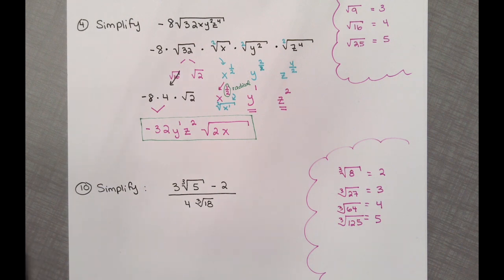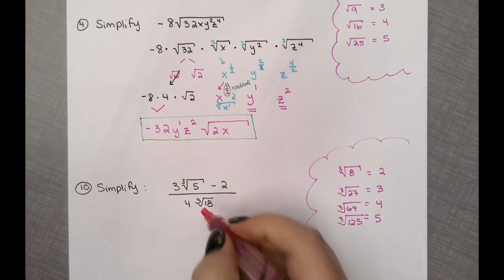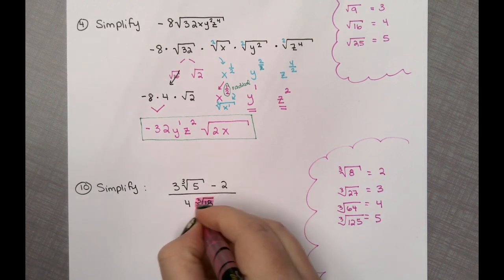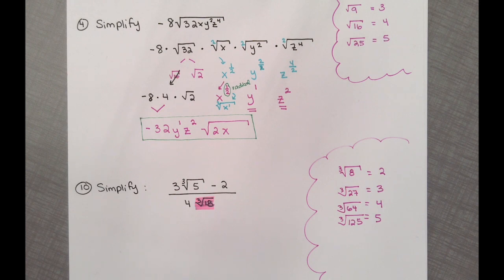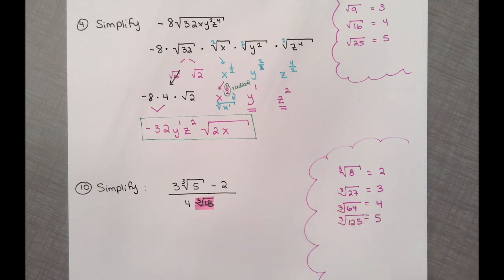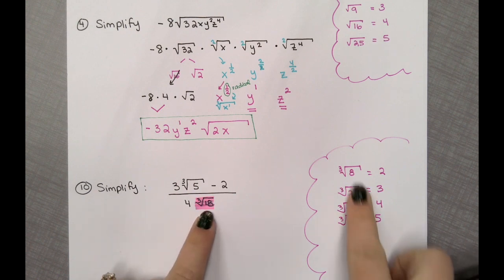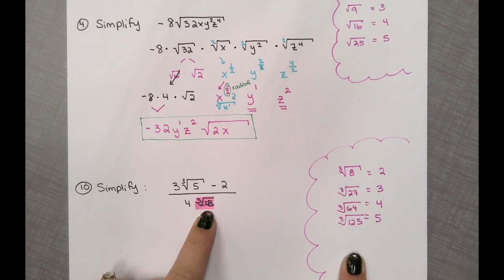Rationalizing the denominator means we want to make the denominator simplifiable. This is a little different for cube roots versus square roots. For a cube root, rather than multiplying top and bottom by the cube root of 18 twice, we can instead find what to multiply 18 by to reach a perfect cube. We want 18 to become one of our perfect cube numbers. So what do I multiply by to get a perfect cube from 18?